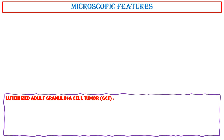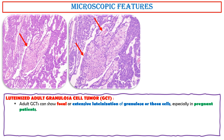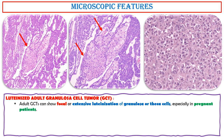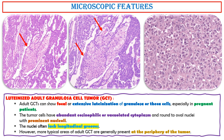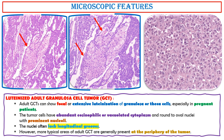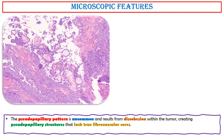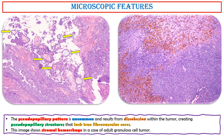Luteinized adult granulosa cell tumor. Adult granulosa cell tumors can show focal or extensive luteinization of granulosa or theca cells, especially in pregnant patients. The tumor cells have abundant eosinophilic or vacuolated cytoplasm and round to oval nuclei with prominent nucleoli. The nuclei often lack longitudinal grooves. However, more typical areas of adult granulosa cell tumor are generally present at the periphery of the tumor. The pseudopapillary pattern is uncommon and results from discohesion within the tumor, creating pseudopapillary structures that lack true fibrovascular cores.